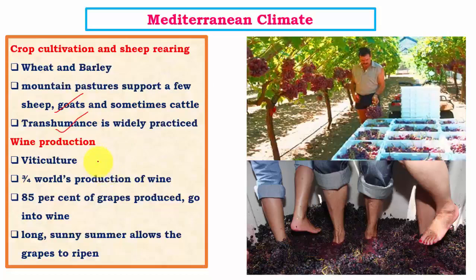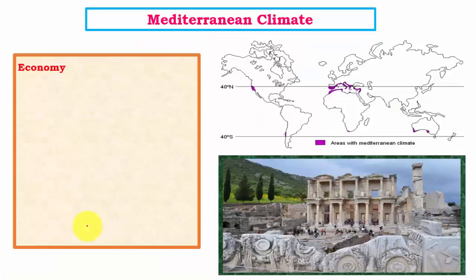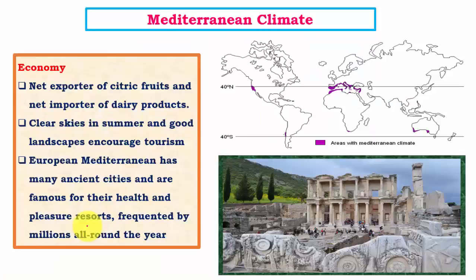One of the important occupations of Mediterranean climate is viticulture — wine production. Most wine is obtained from grapes, which grow very well in the Mediterranean climatic region. The most important climatic factor enabling good grape cultivation is the long sunny summers, which allow for the ripening of grapes. Tourism is another important occupation, as the Mediterranean region — particularly around the Mediterranean Sea — has many historical places from the Roman Empire and ancient Greece, making it a very important tourist destination.